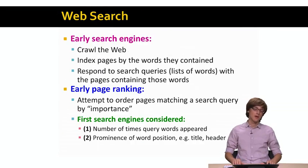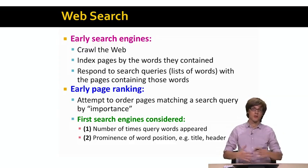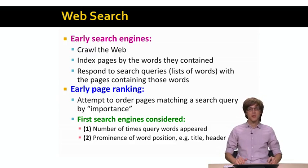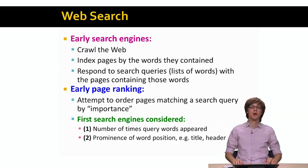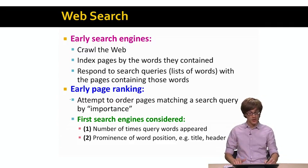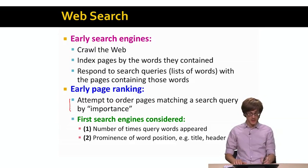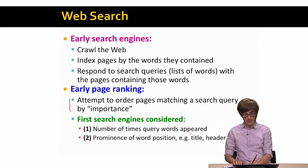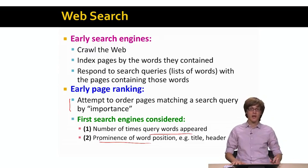So how did web spam really work? Early search engines operated the following way: they would crawl the web and collect web pages, then index them by the words they contained. Whenever somebody searched, they would look at a given web page and see how much it mentioned the words in the search query, then rank results based on the number of times they mentioned a given search query term. The ranking considered the number of times query words appeared and also the prominence of word position — whether the word was in the title or header of a web page.